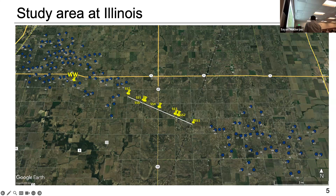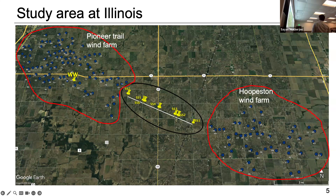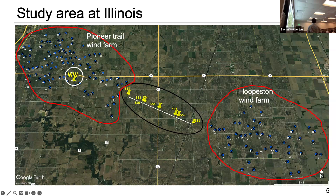In our study area in Illinois, there are some additional sources we are most interested in. There are two groups of wind turbines — the Houston wind farm and the Panatral wind farm. Fong is going to talk in more detail about how many wind turbines are in these two groups. We deployed several nodes there: two nodes deployed right below the wind turbines and one node inside a nearby structure. Fong and Alejandro will talk about the details of these nodes and how they can be used to monitor vibrations generated by the wind turbines and traffic on the road.